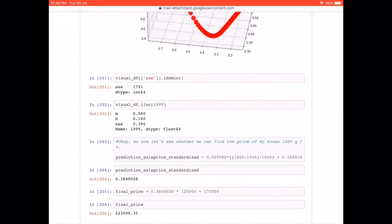So we can say that our 1400 square feet house is going to cost us about $223,000. And that is the main intention behind machine learning that you find the parameters from the data.